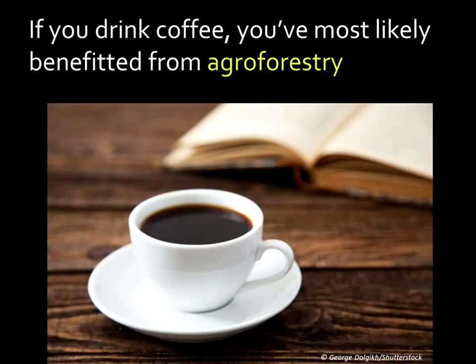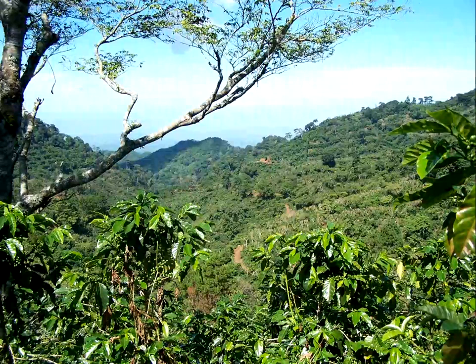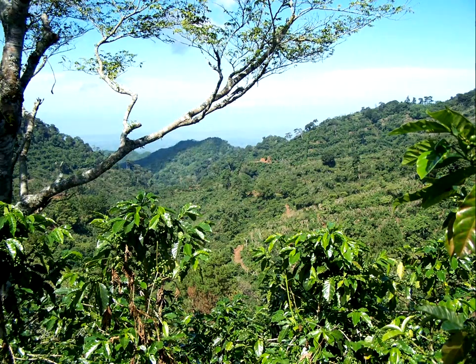Agroforestry may be a completely new term to you — I would not be surprised at all if you've not heard of it before. But if you drink coffee, then you've most likely benefited at some point from a product that comes from agroforestry. In this image, you're looking at a landscape where coffee is produced. Some of the plants in the foreground are actually coffee shrubs, and you can see it's a very diverse landscape, not focused on just one crop but many different species. We would consider that an agroforestry landscape.